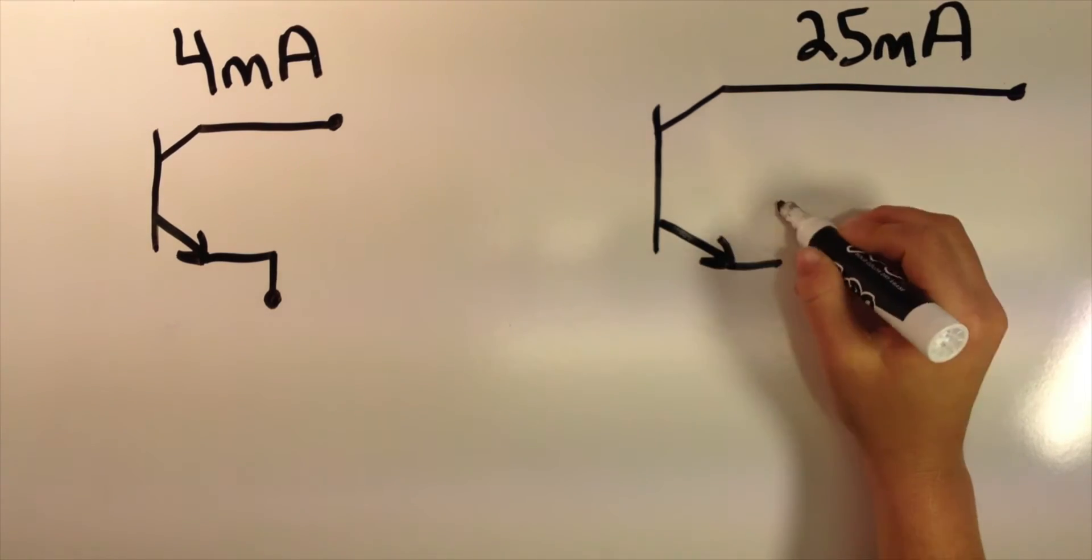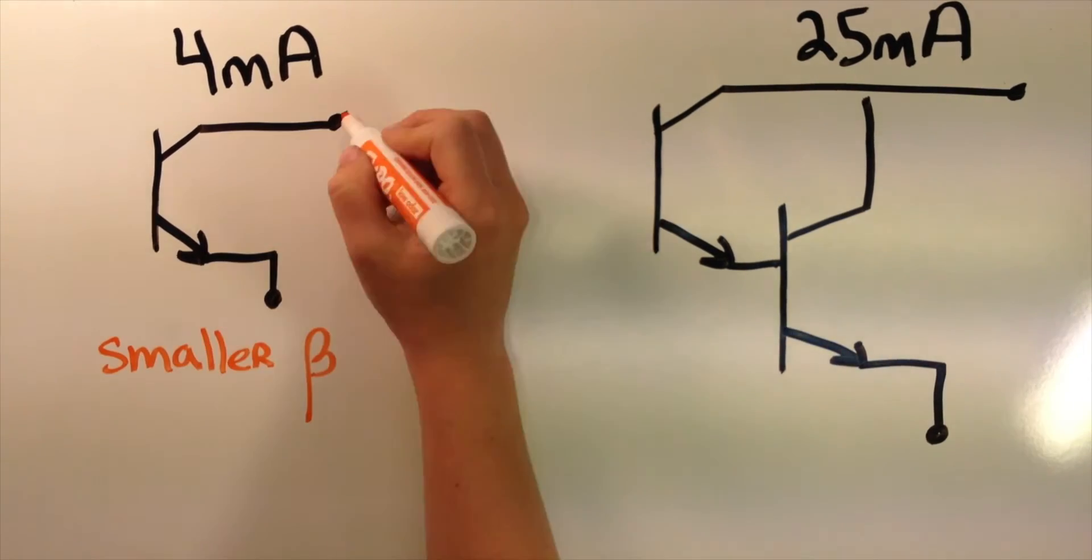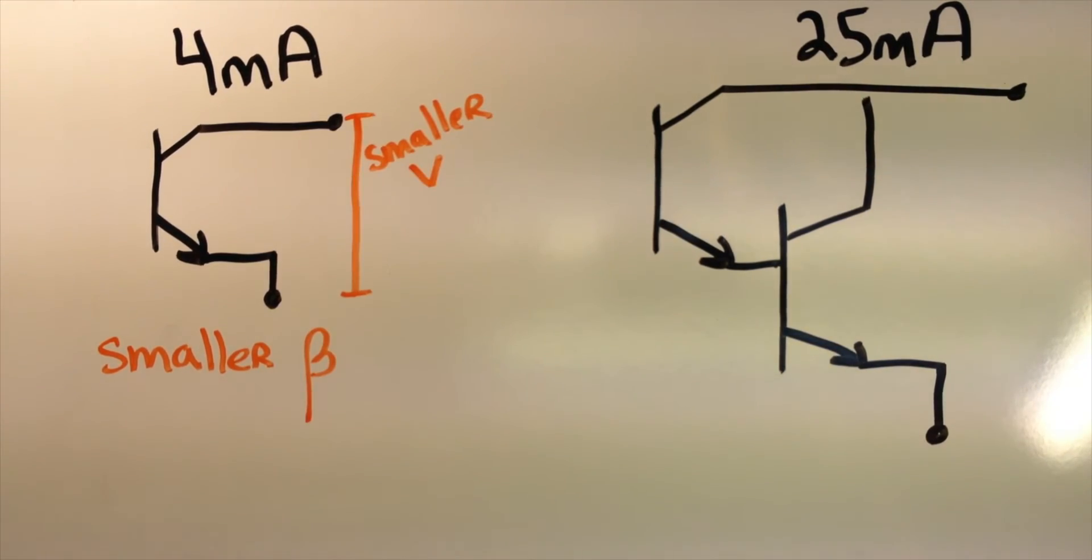The 25mA option in comparison uses a Darlington pair. The transistor used in the 4mA has a lower current gain and a smaller voltage drop across it, whereas the 25mA sink sourcing options have a higher current gain and a larger voltage drop.